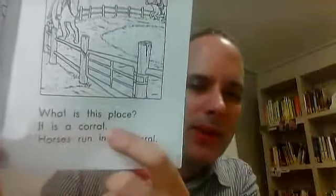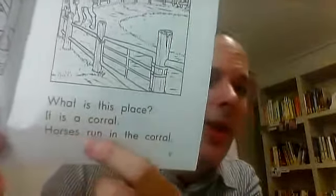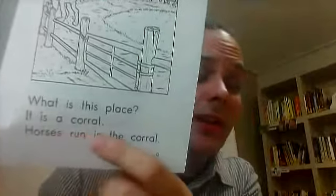What is this place? It is a corral. Horses run in the corral. It's a place for horses to get exercise.